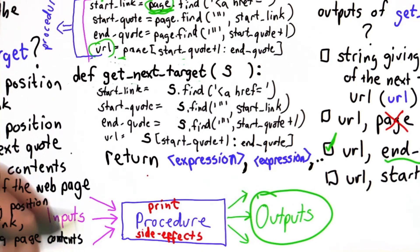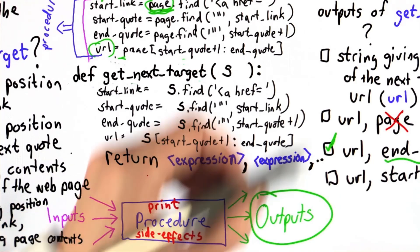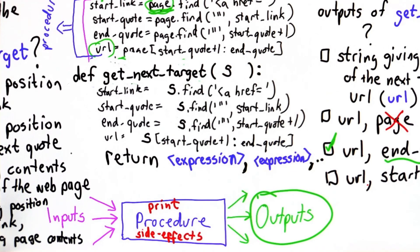So in this case, we do want to have outputs from getNextTarget. We want to return results so we know how to continue. And we decided what the output should be are the value of the URL, so we want to find the string that's the next target, and the value of the end quote, so we know the position where it was found.